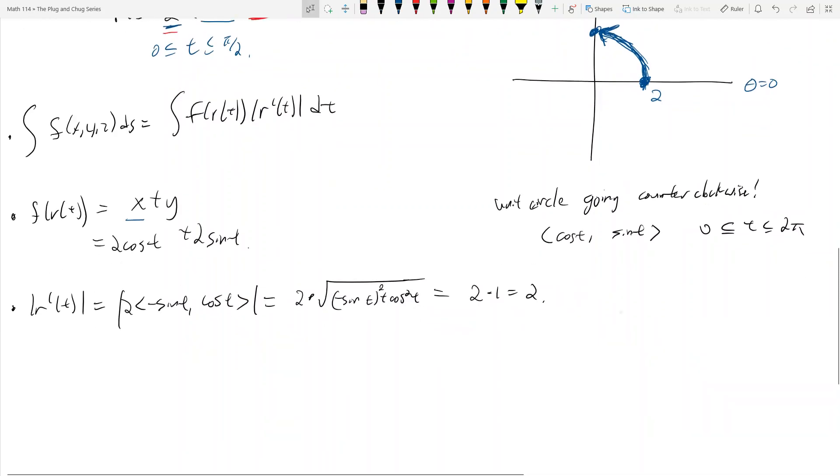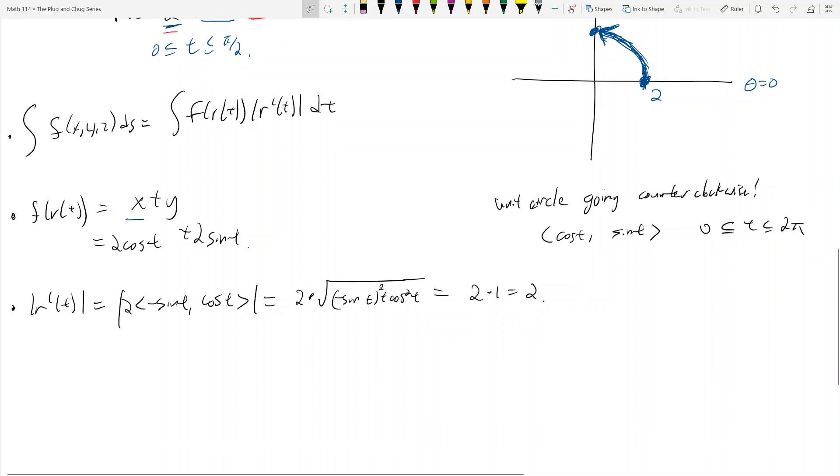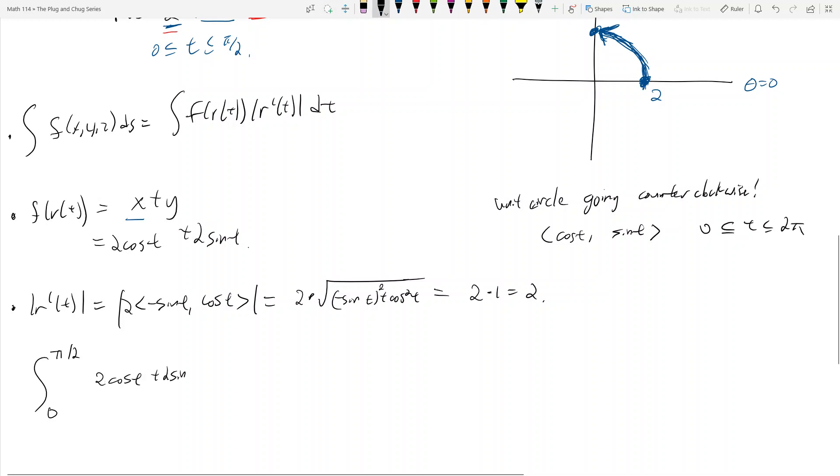So then our integral goes from 0 to pi over 2. And then we get f of r of t, which is 2 cosine t plus 2 sine t times 2, which is r prime of t. And so now I'm just going to factor out a 4 out in front and we get 0 to pi over 2 of cosine t plus sine t. And if you evaluate this, this is going to be 4 times 2, which is going to be 8.